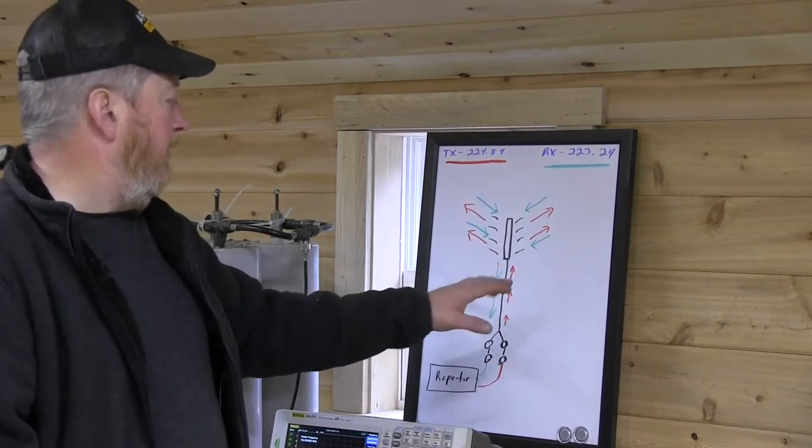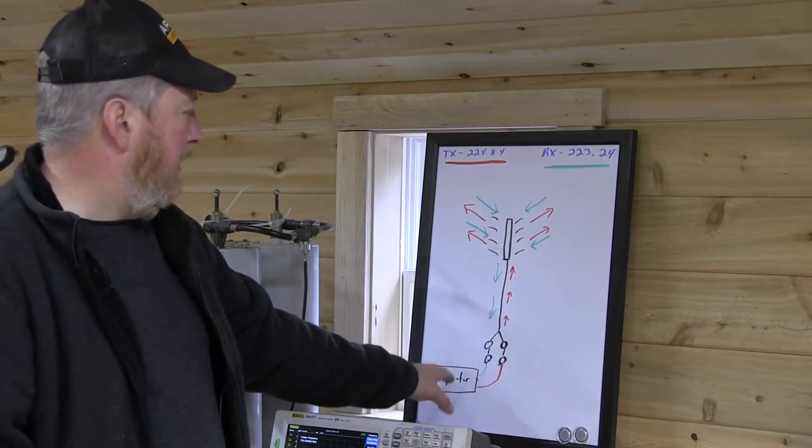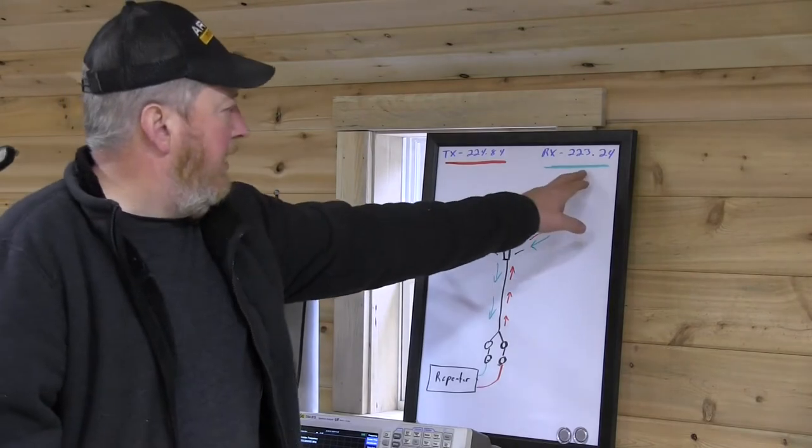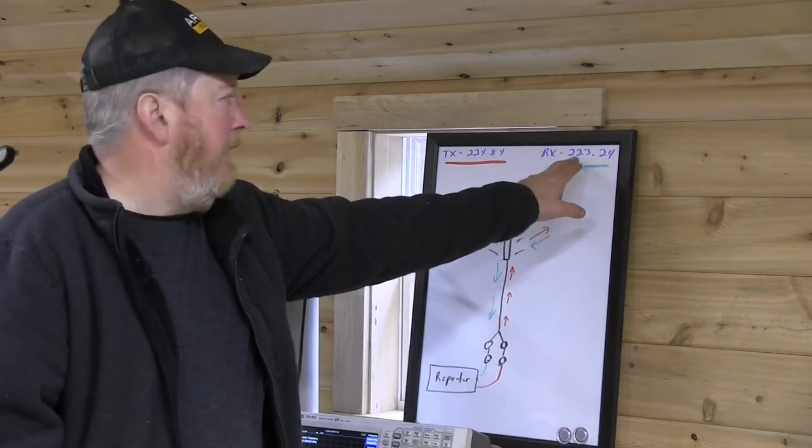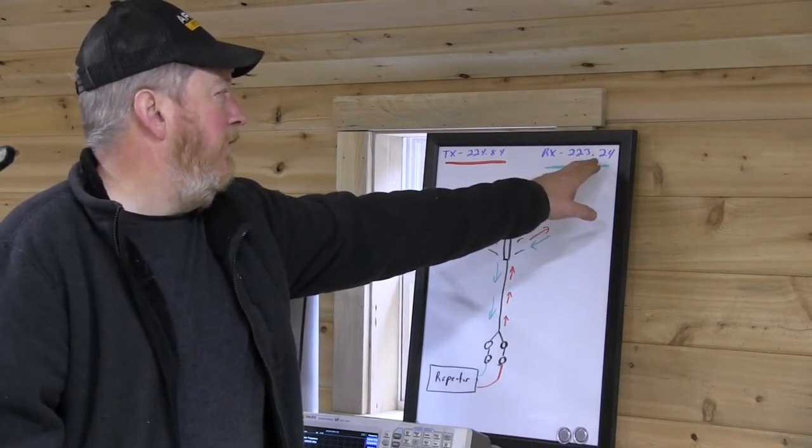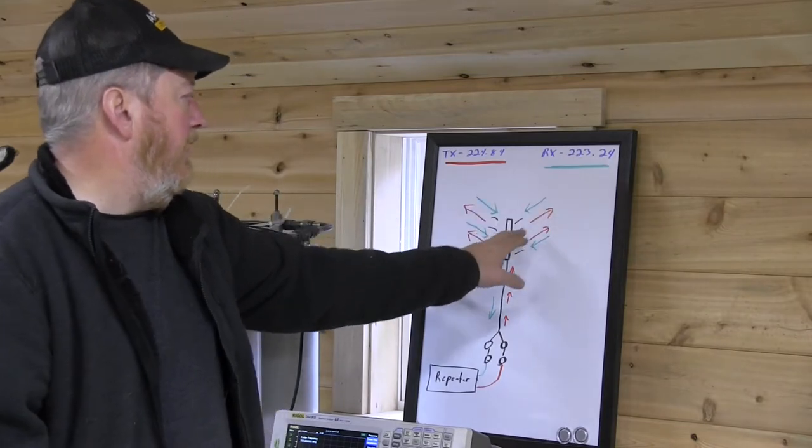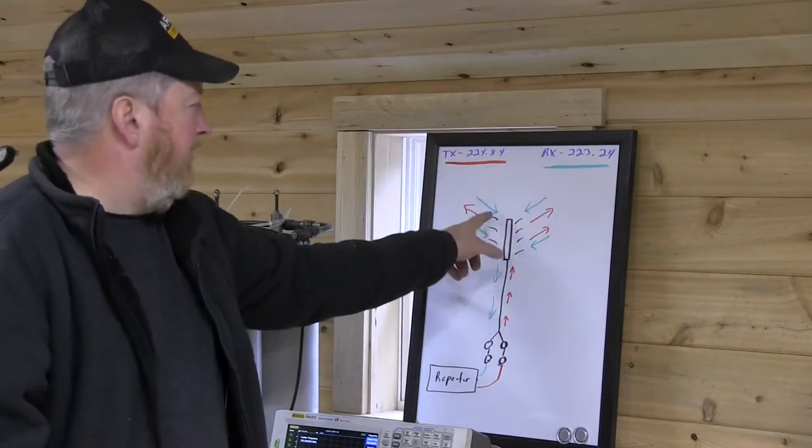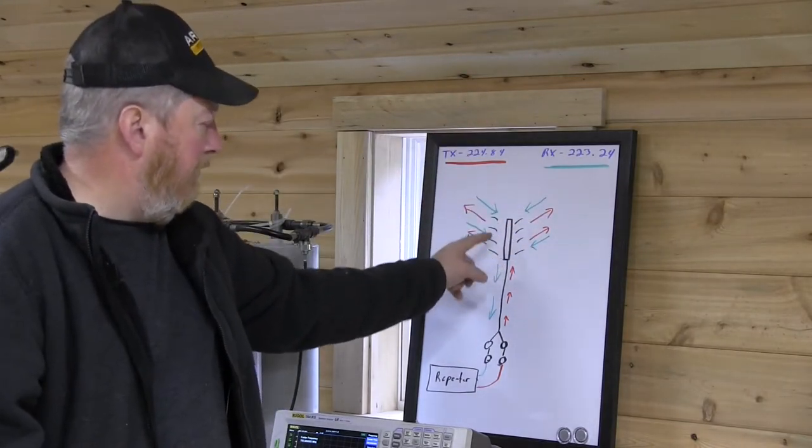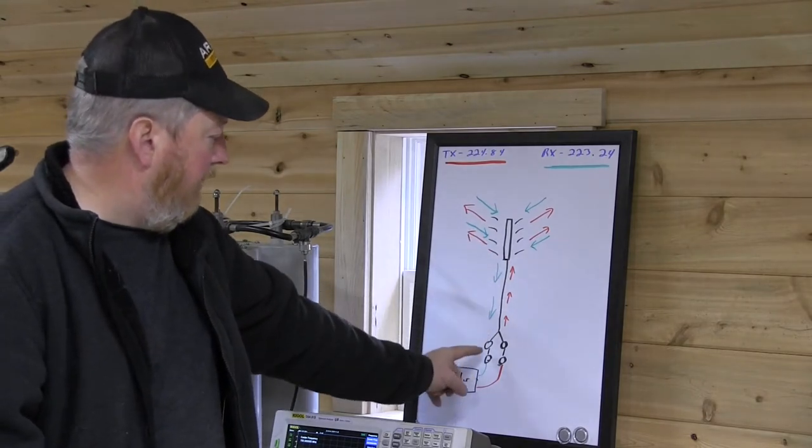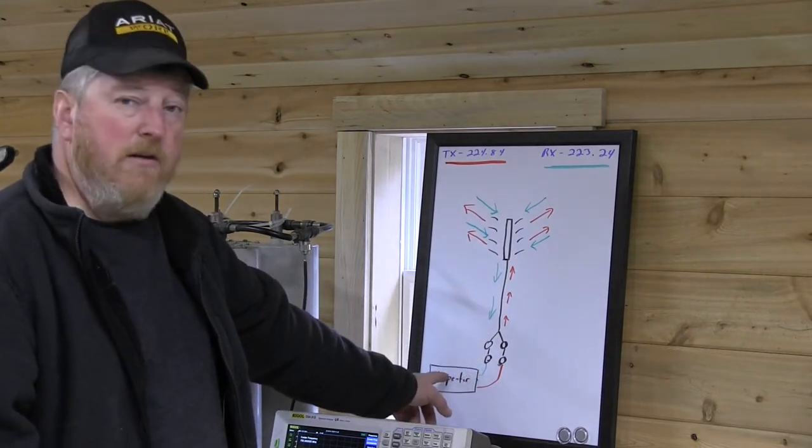So what's happening with the repeater is when you key up your radio to talk to my repeater, your radio transmits on 223.24, goes out through the airwaves, my antenna hears it, which is represented by green, comes down the feed line through two of the duplexers and into the repeater.